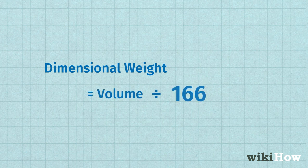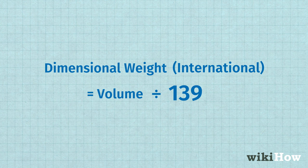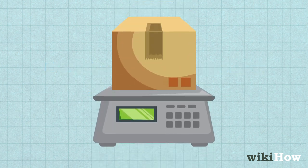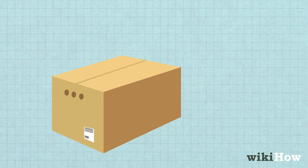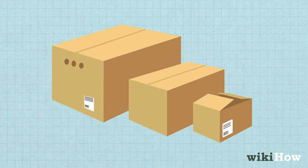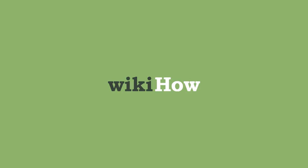If you need to find out the package's dimensional weight, divide the volume by 166 if you're shipping within the U.S., or 139 if you're shipping internationally. If you can, weigh the package on a scale to check its actual weight against the dimensional weight. Your shipping costs will likely be based on whichever number is bigger.